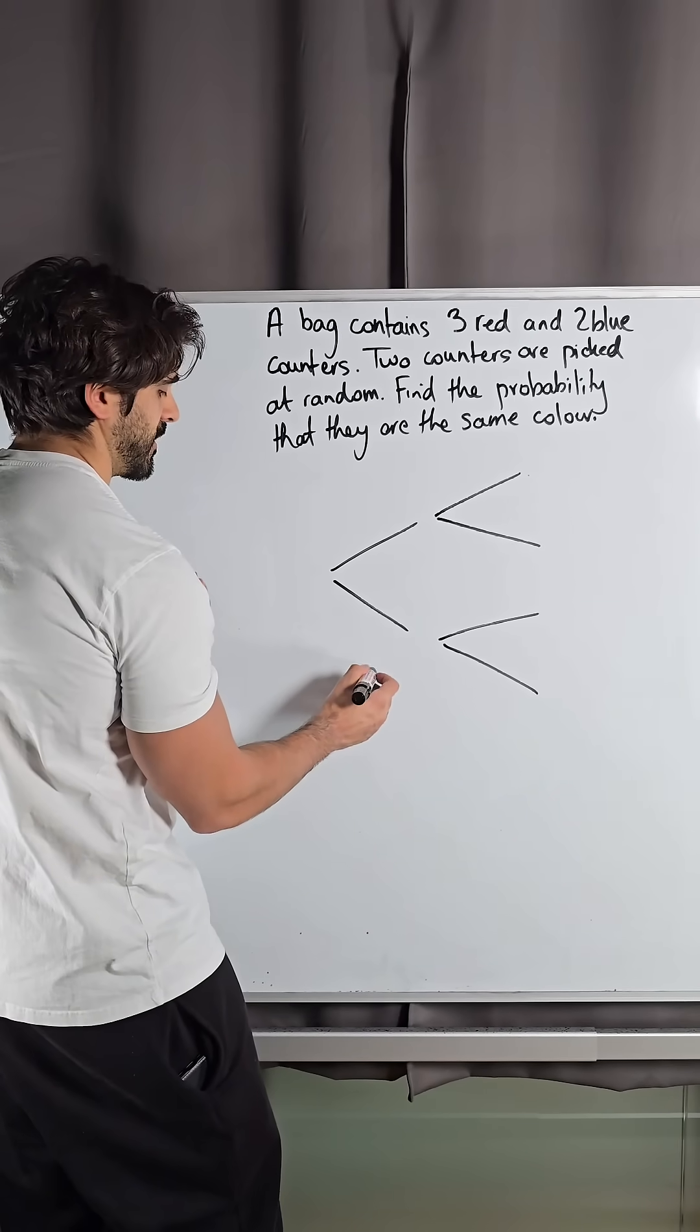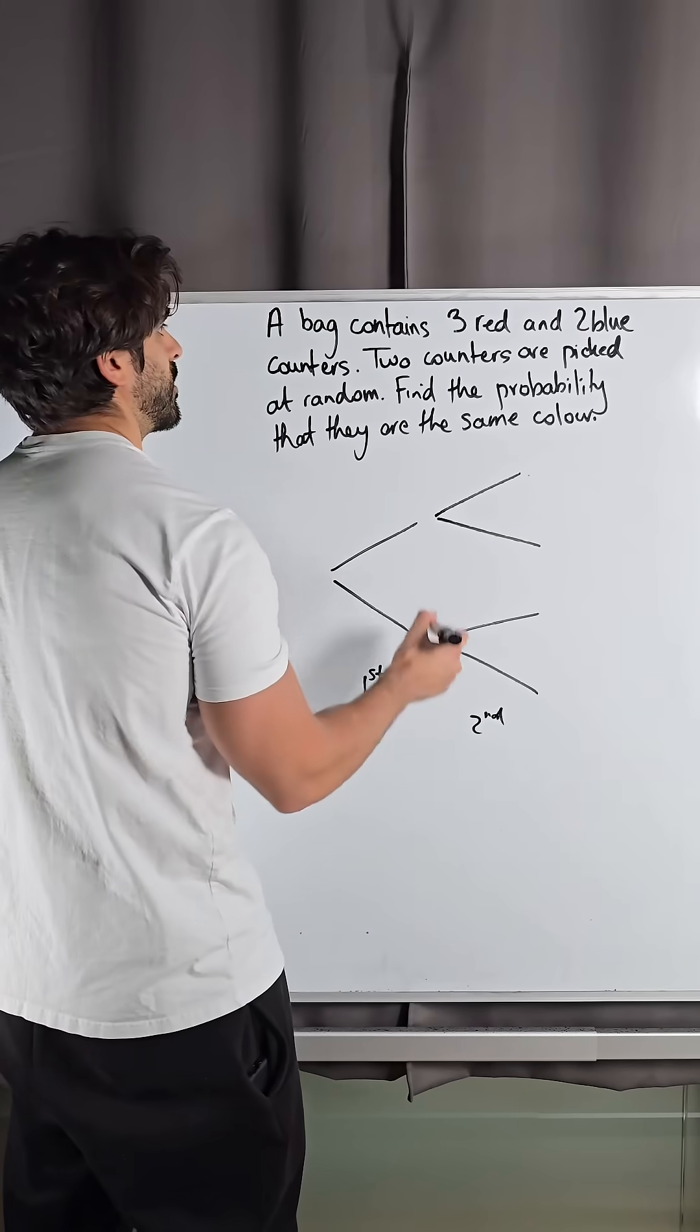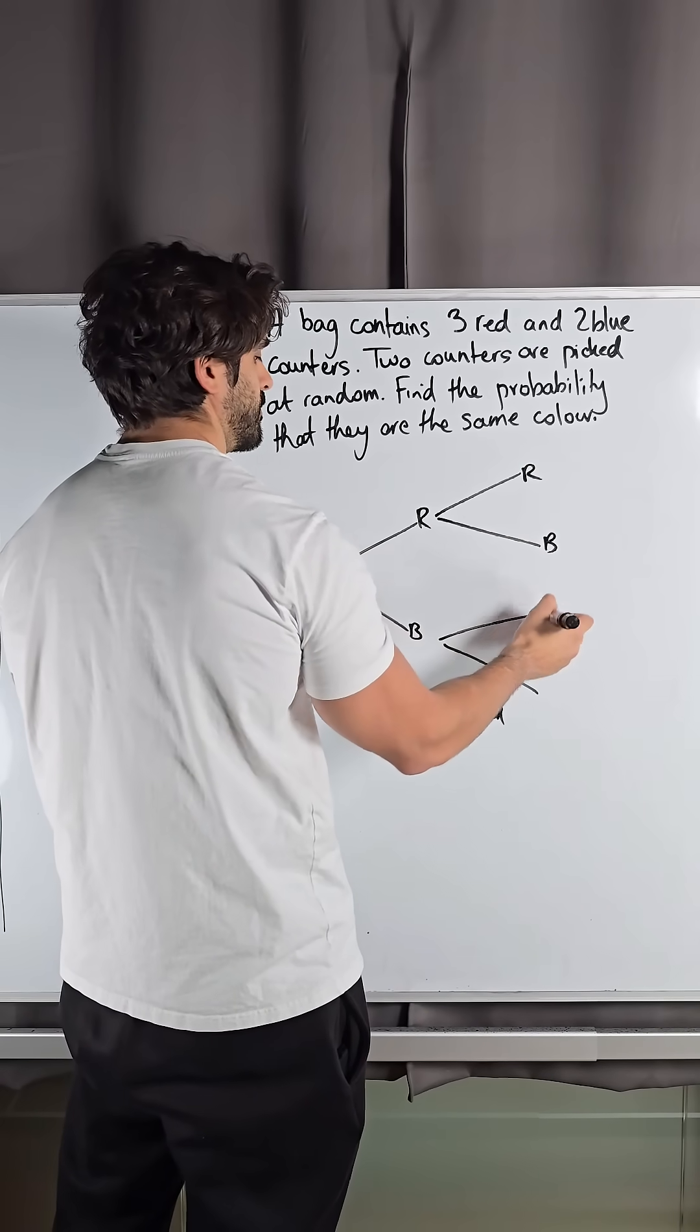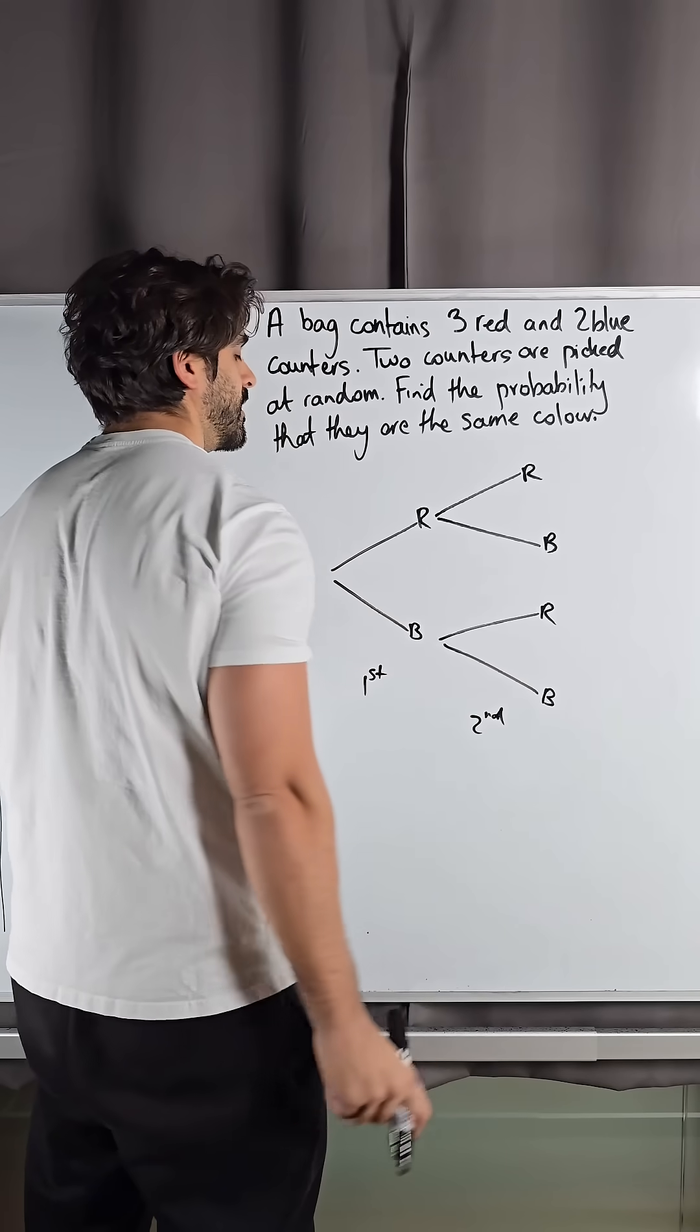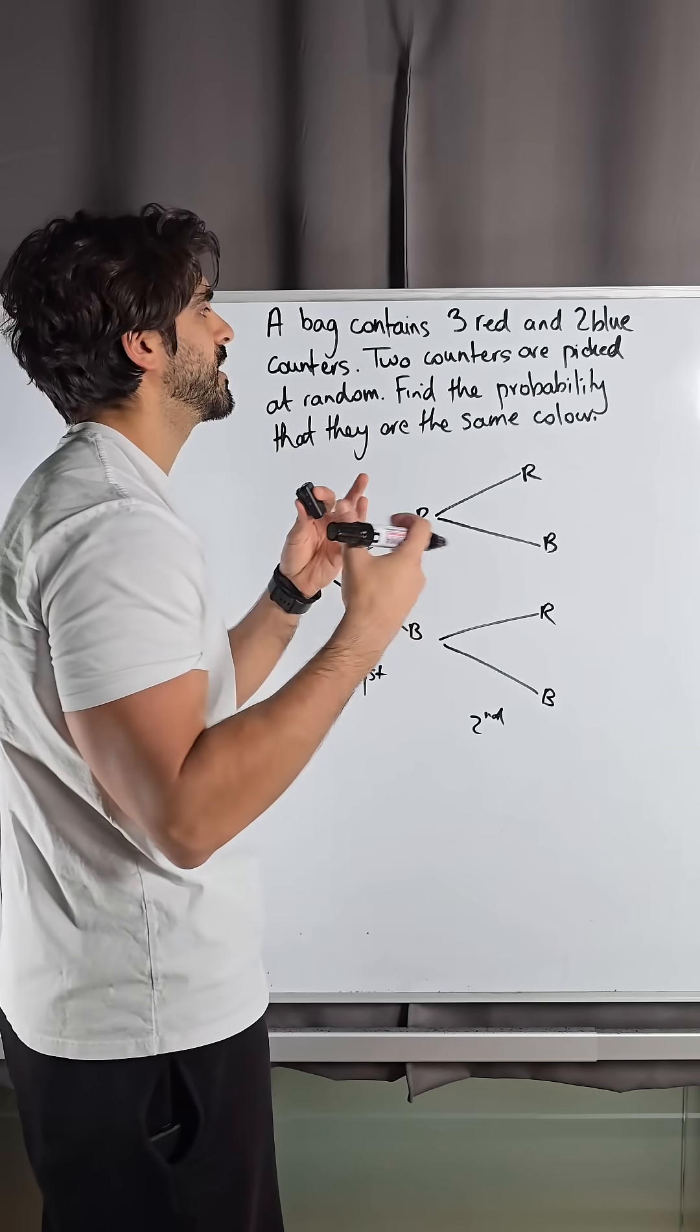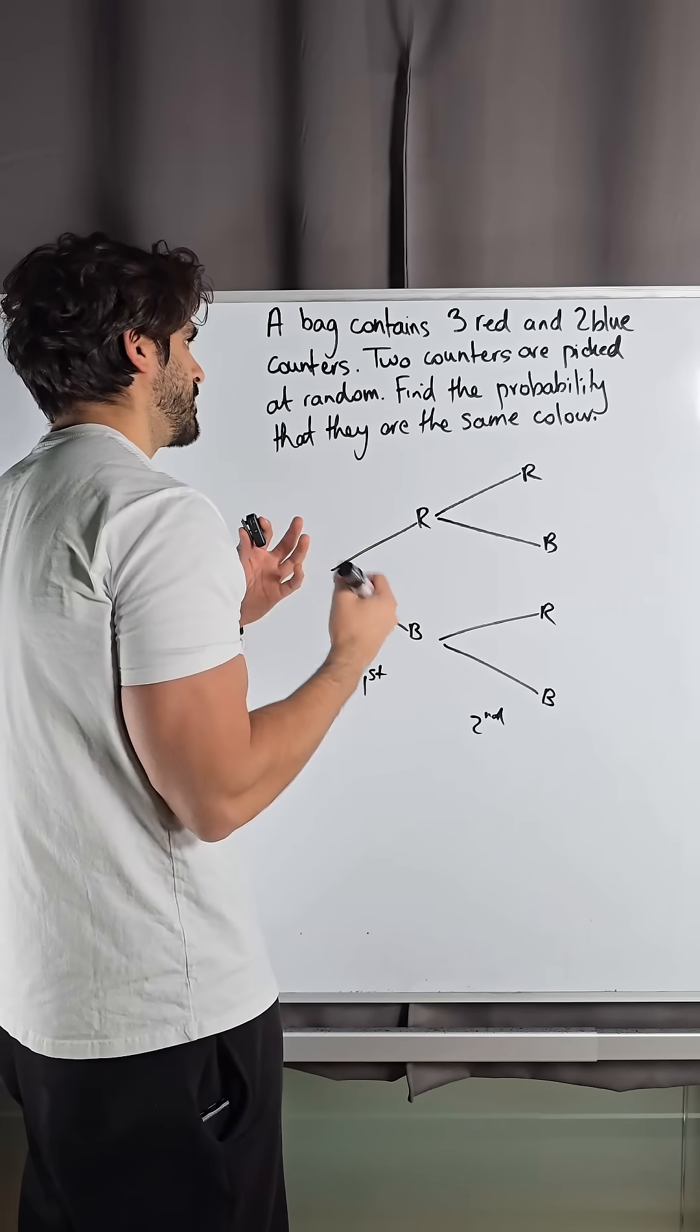So this is your first take and your second take. We could either pick red, blue, red, blue, red, blue. Now remember, if they don't state it, it means they are not being replaced - two counters are being picked.